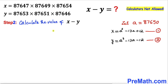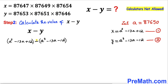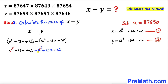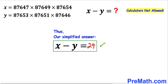Now for the final step, let's calculate x minus y. Replacing x with (a³ − 13a + 12) and y with (a³ − 13a − 12), and distributing the negative sign, the a³ terms cancel and the −13a terms cancel. We're left with 12 + 12 = 24. Therefore, x minus y equals 24. Thanks for watching — please subscribe to my channel for more exciting videos!